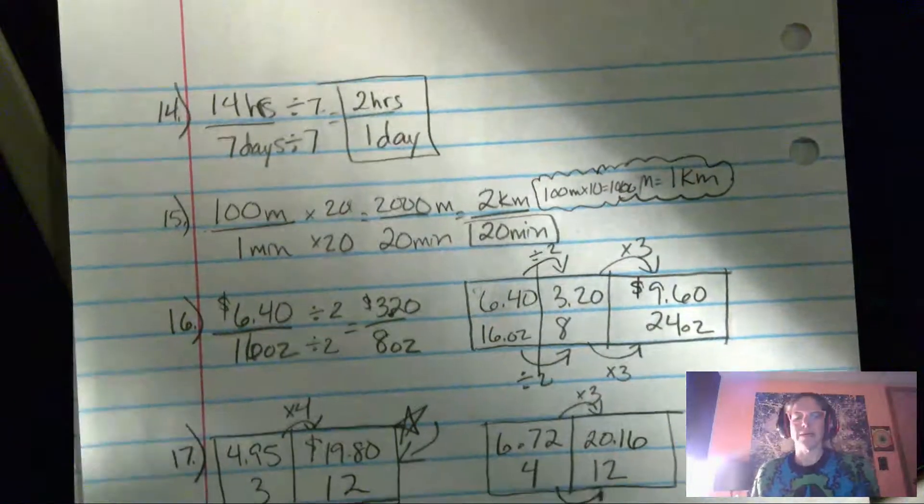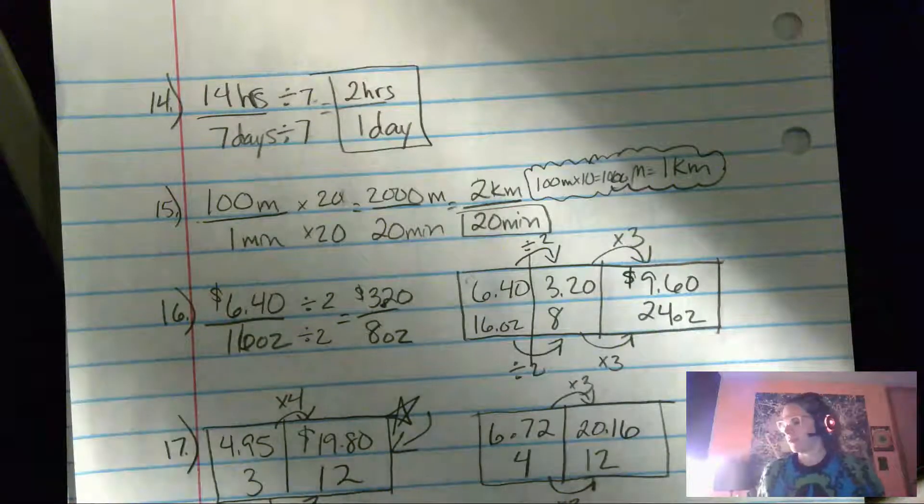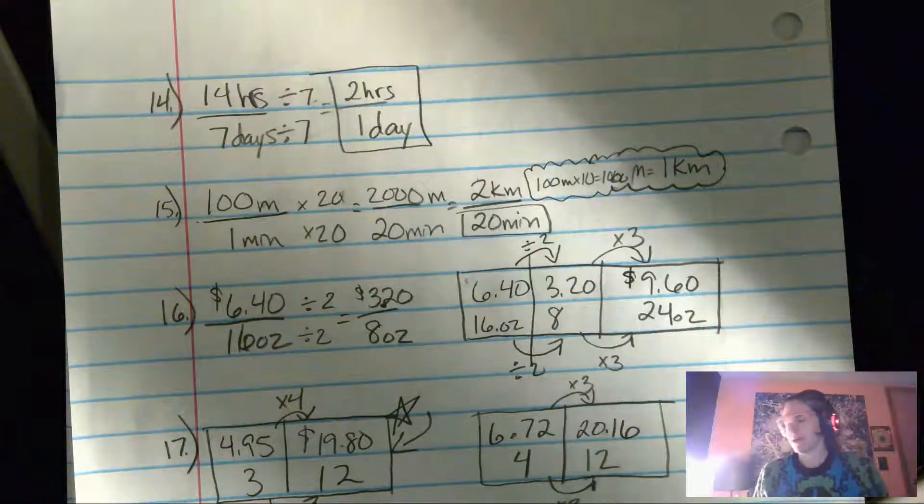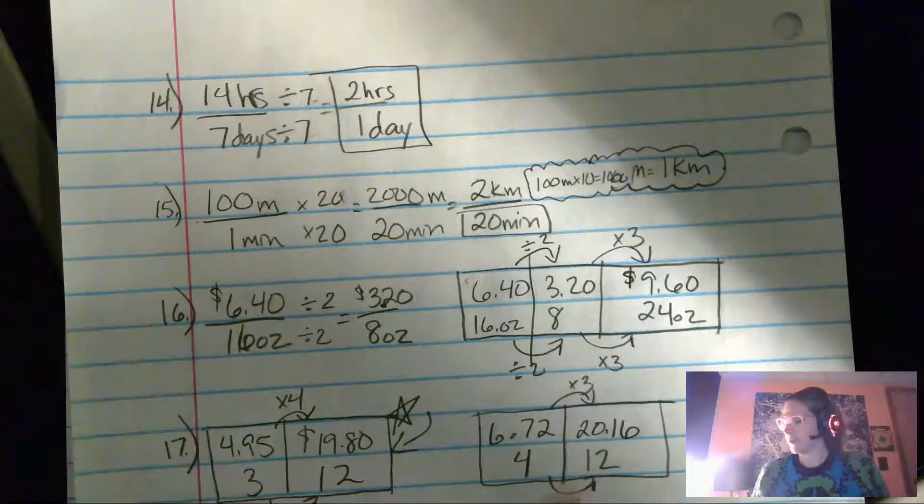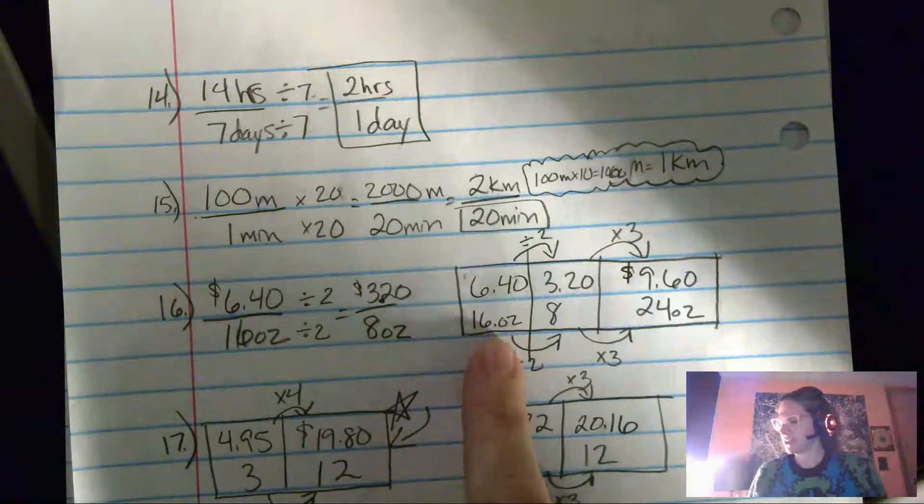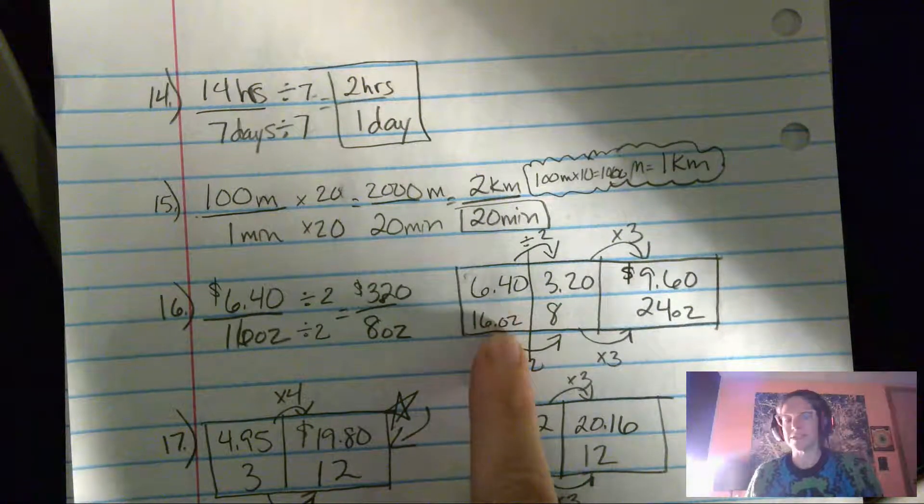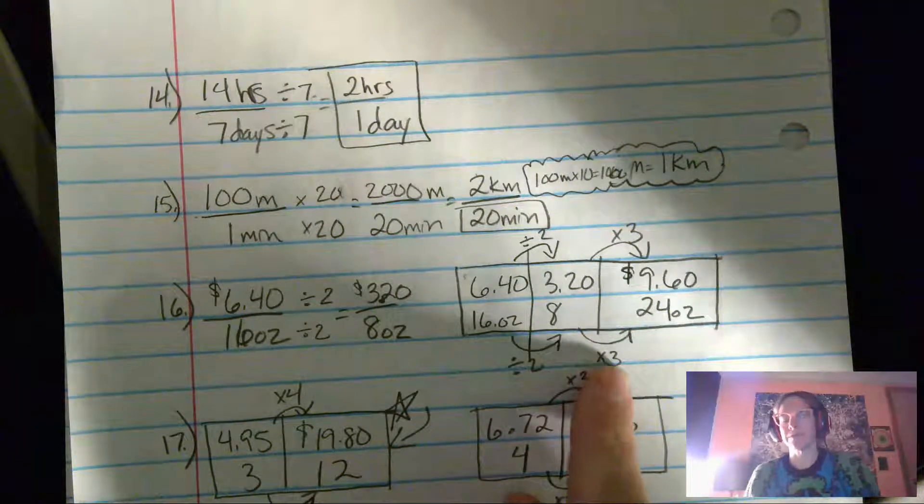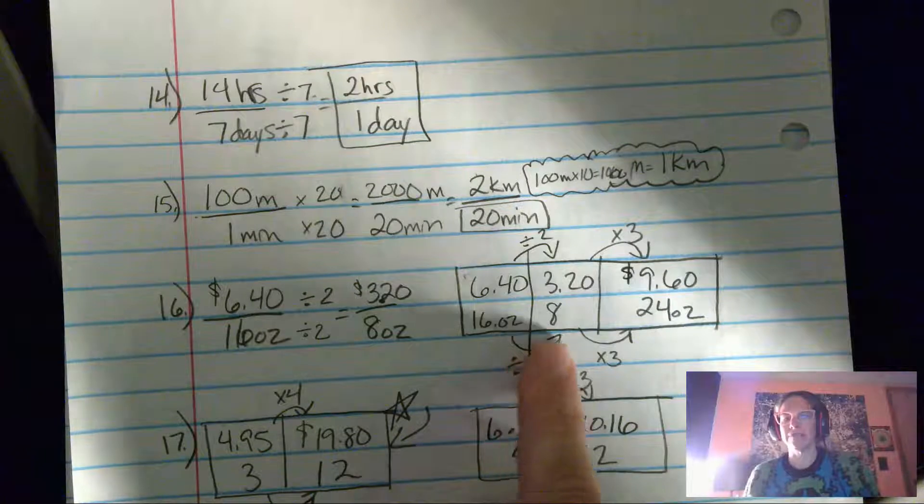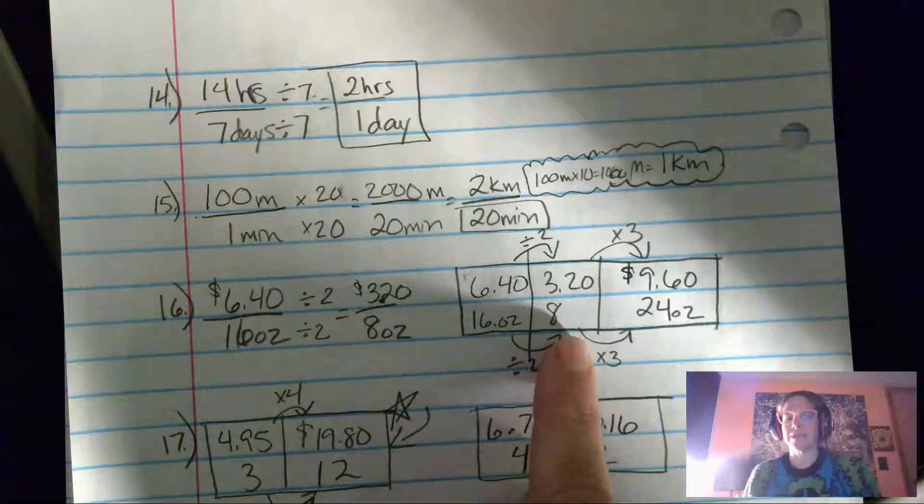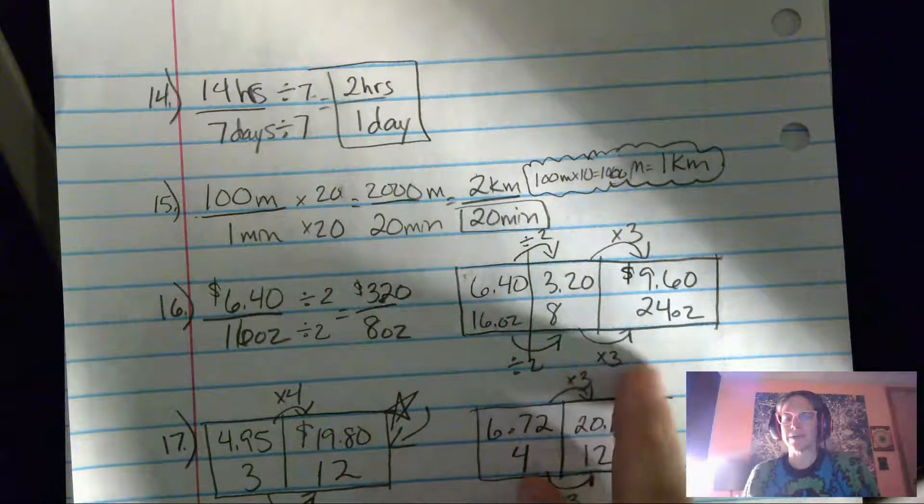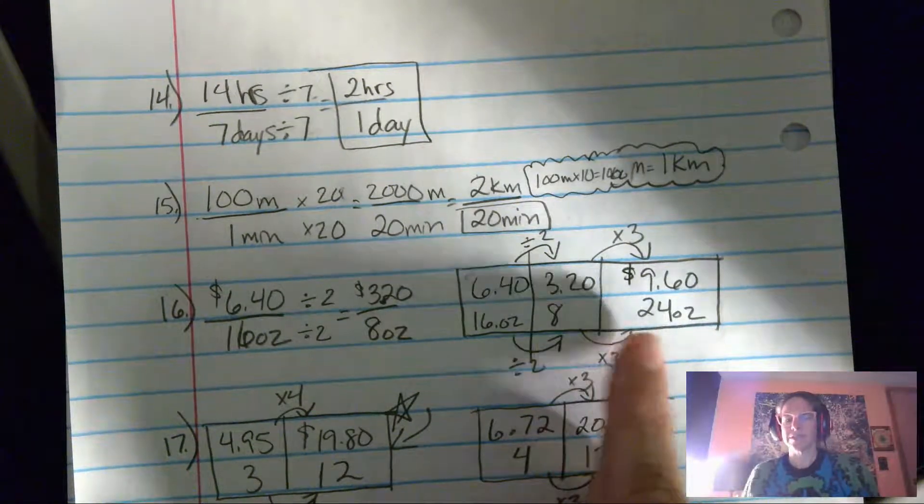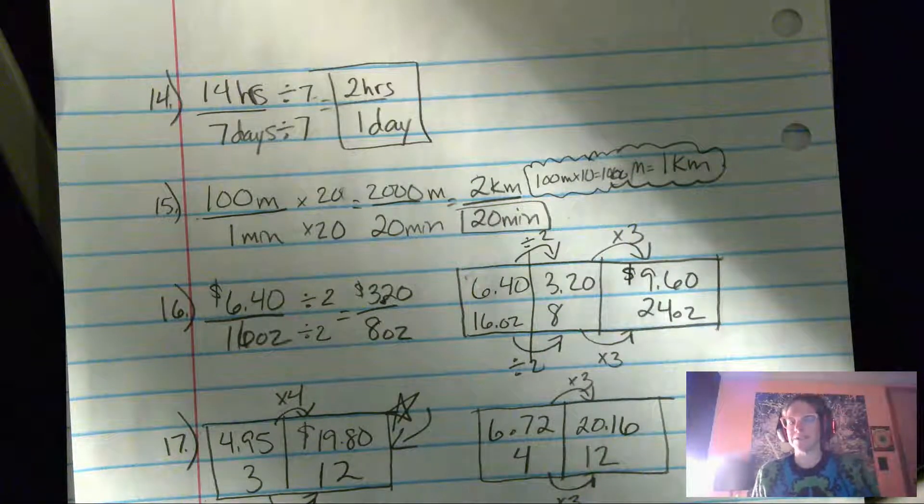Number 16 required a couple of different steps. I drew out my big old rate table right here. I could have divided both the $6.40 and the 16 ounces, both of these by 16 to find out my unit rate and then multiply both of those by 24. But instead I decided to divide it in half and get to eight because from eight, I just have to multiply by three to get to 24 ounces. And so that's what I did and it's $9.60 for 24 ounces.